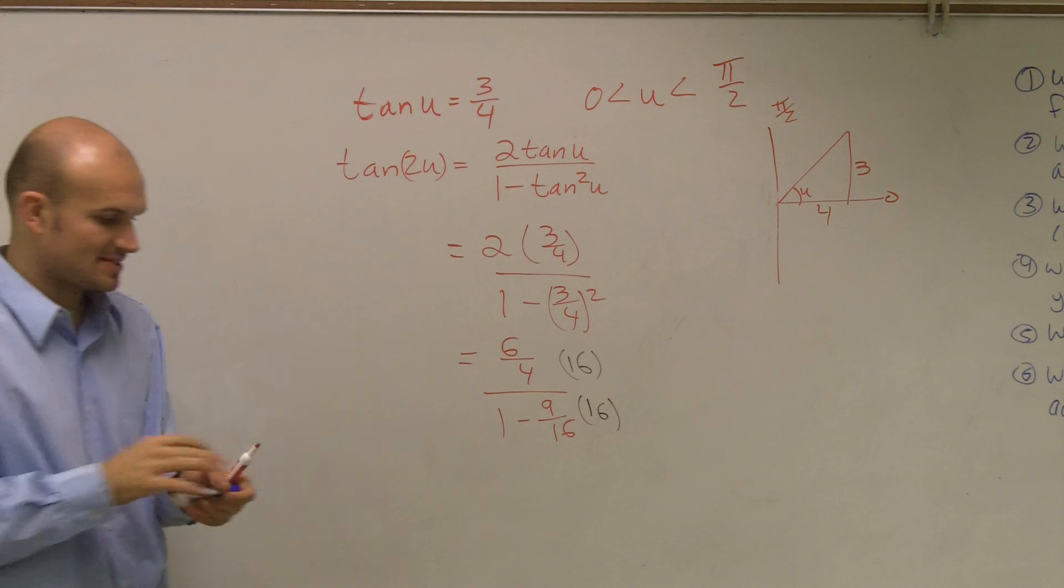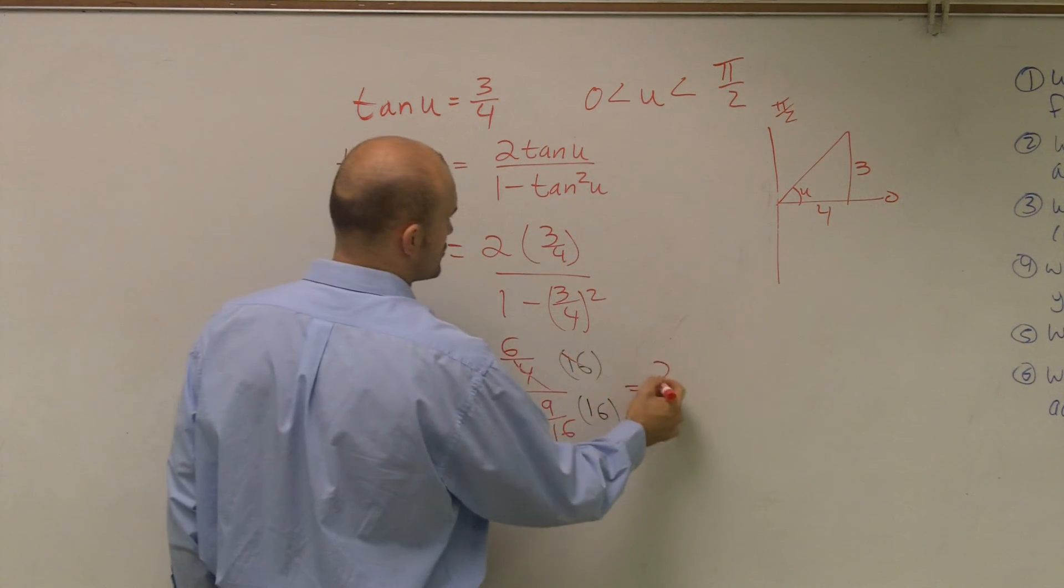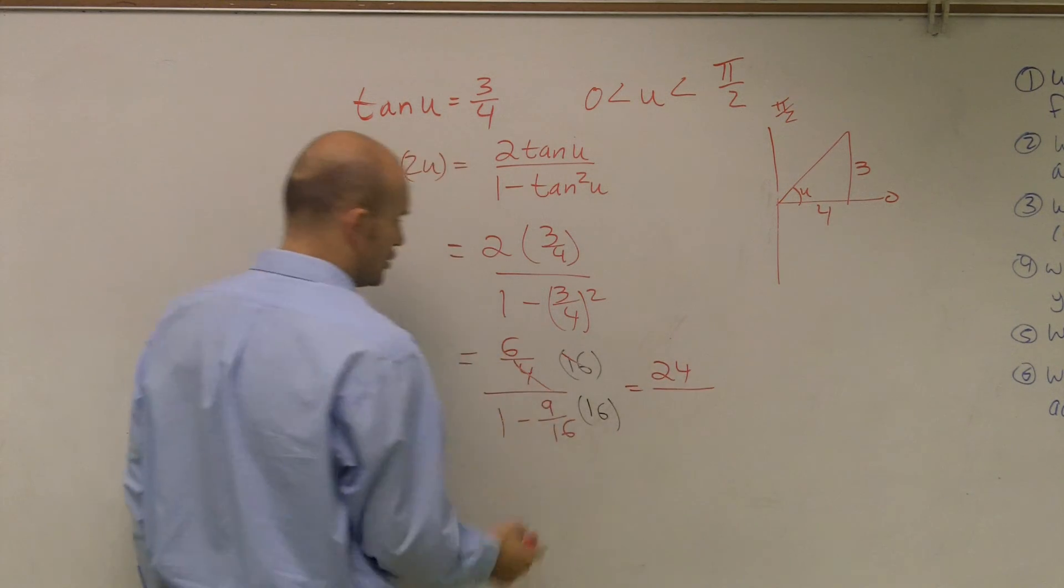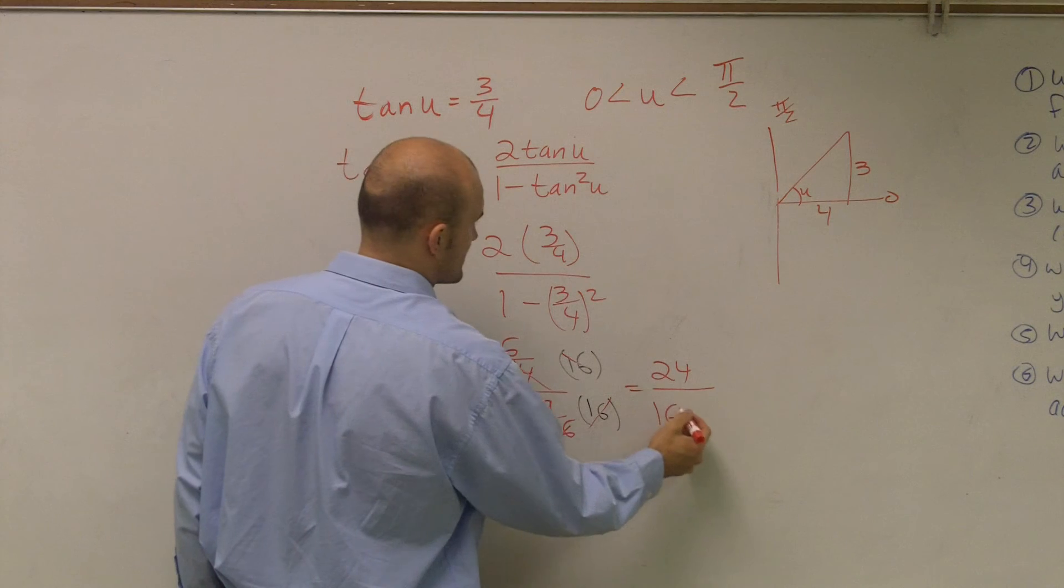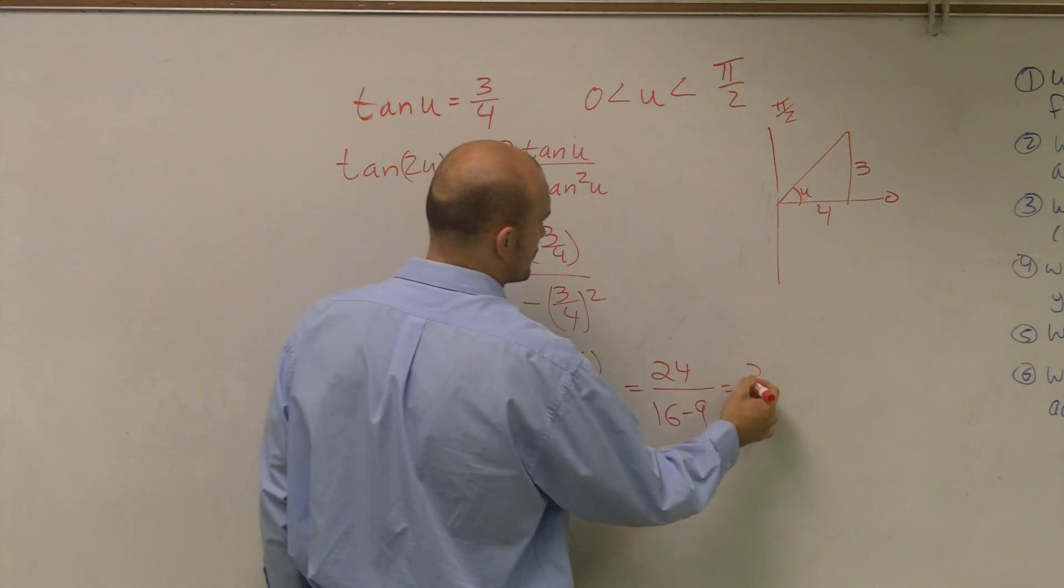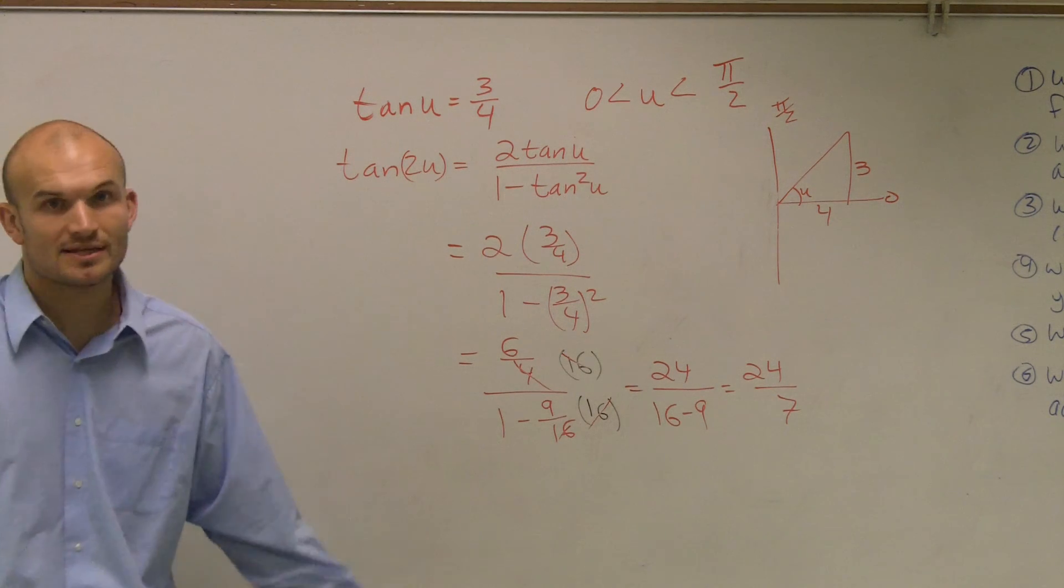When I multiply everything times 16, that cancels out to give me 4 fourths times 6 equals 24. All over, this becomes 16, those cancel out. So I have 16 minus 9 which equals 24 over 7. And that's my final answer.